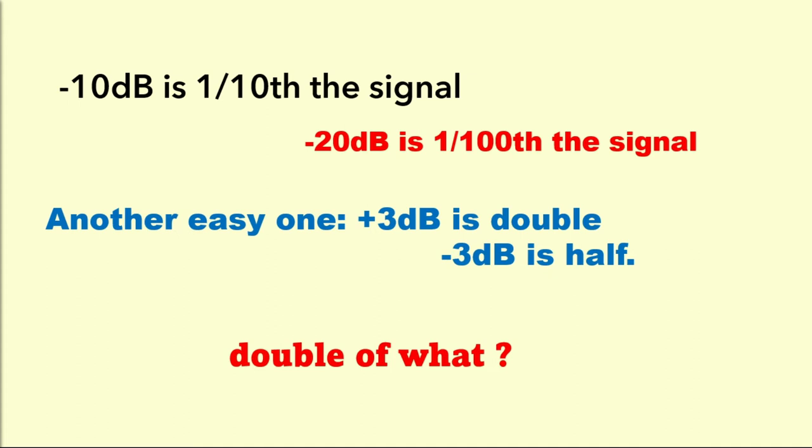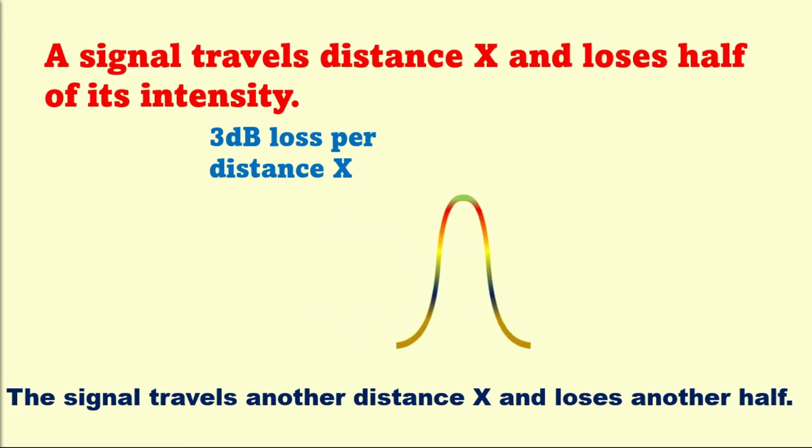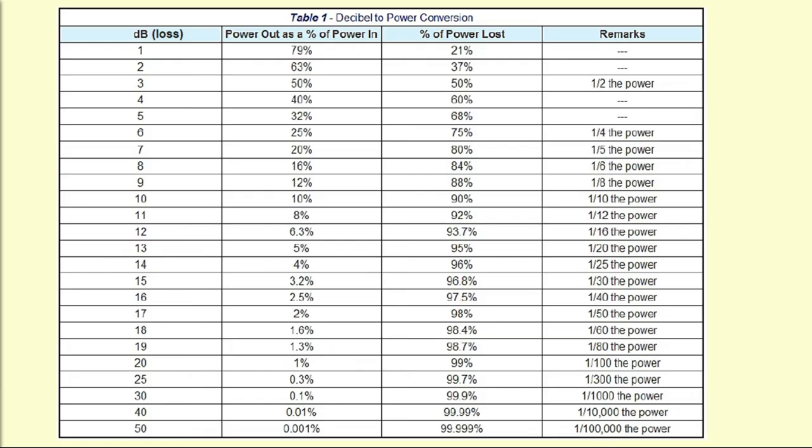Let's take same example. A signal travels distance X and loses half of its intensity. There is a 3 dB loss per distance X. At distance 2X there is 6 dB of loss. At distance 3X it is 9 dB. Here is the table helps to understand after X dB loss how much power remain.